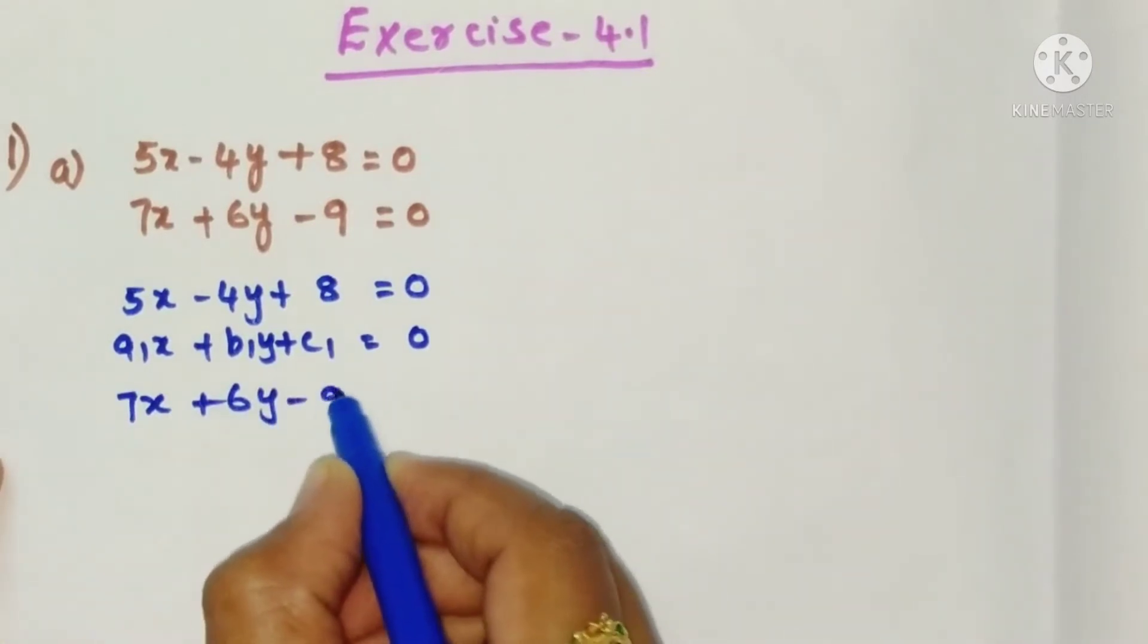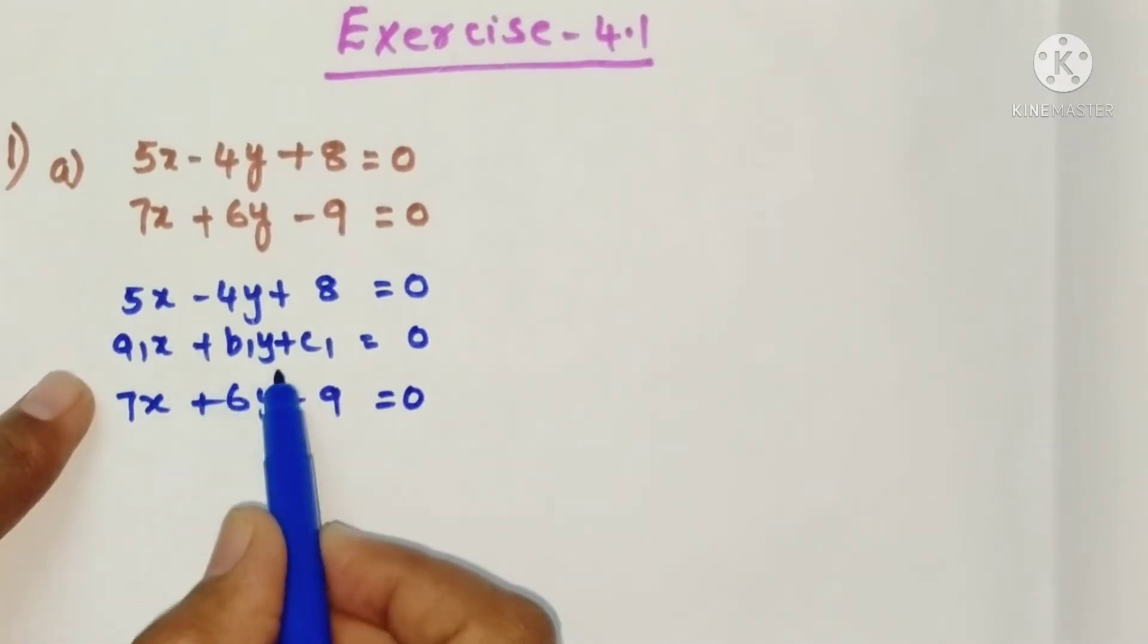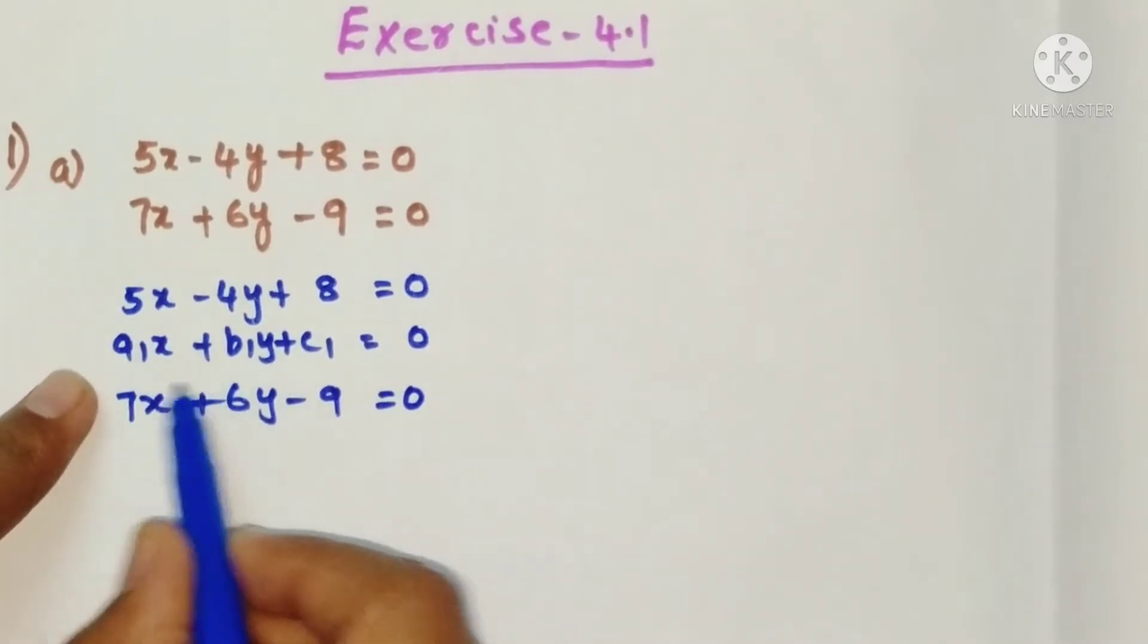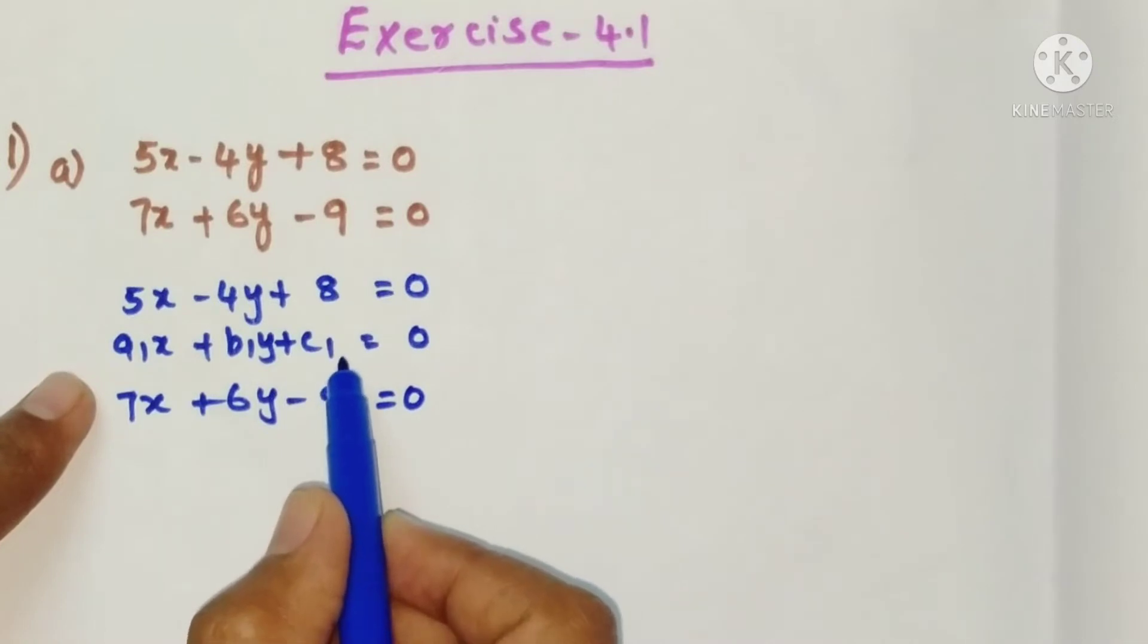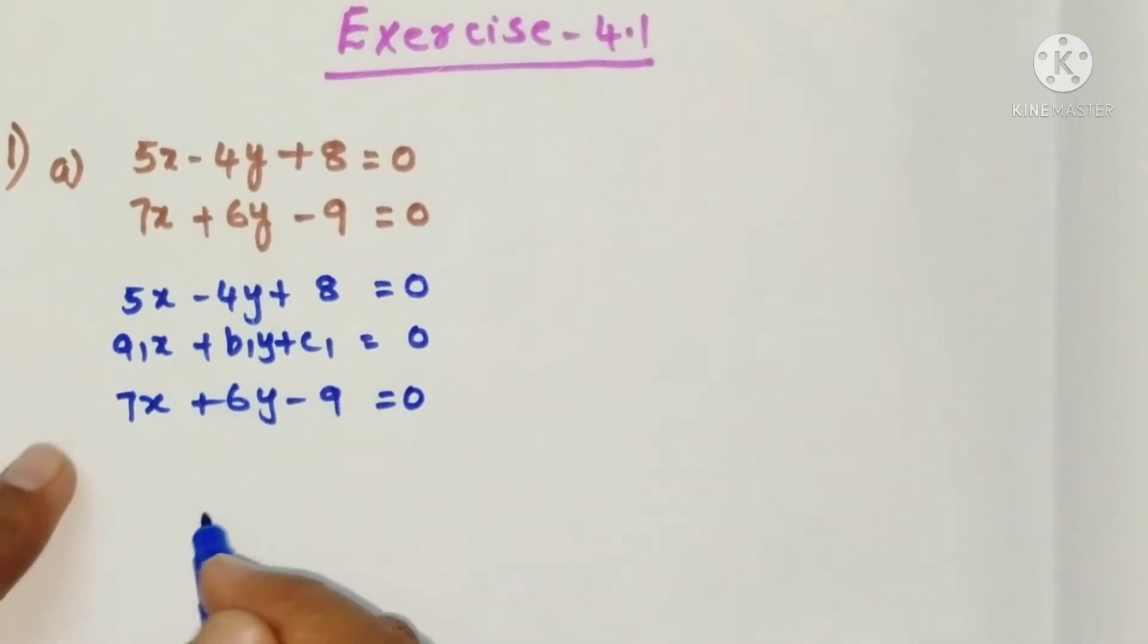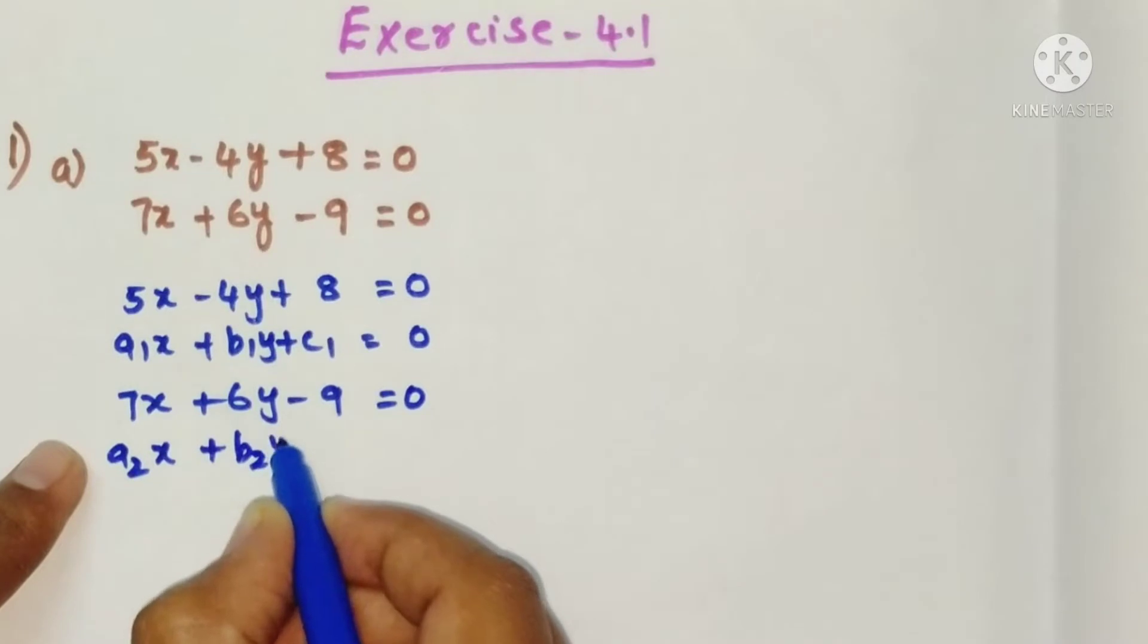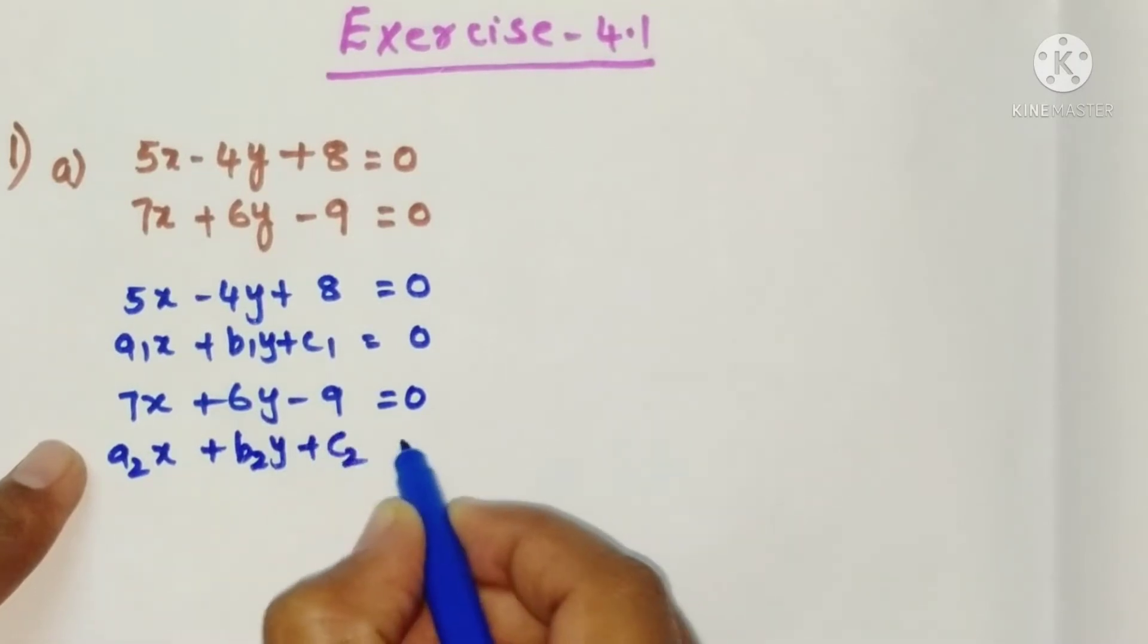Why we are comparing with this equation? Because the general form of linear equation in two variables is a1x plus b1y plus c1. So here a2x plus b2y plus c2 equals 0.